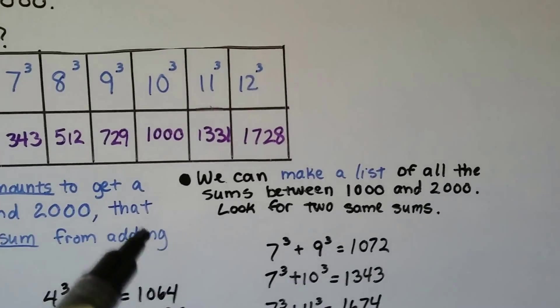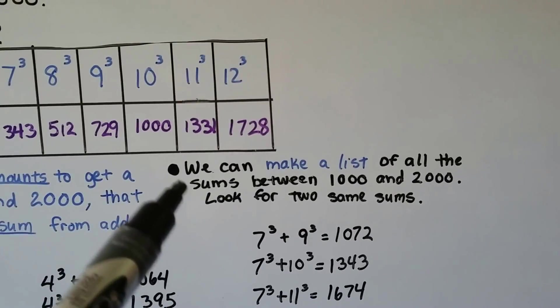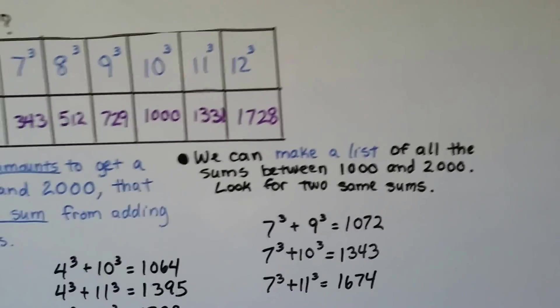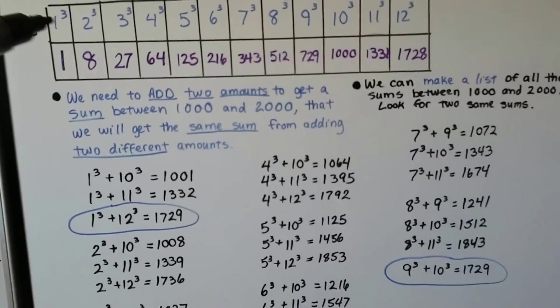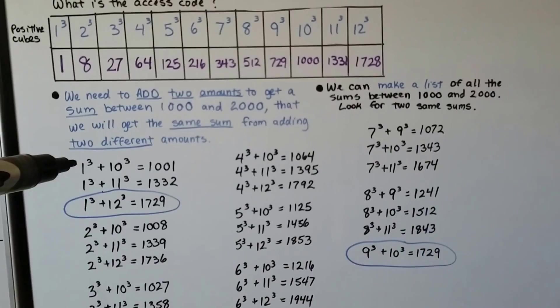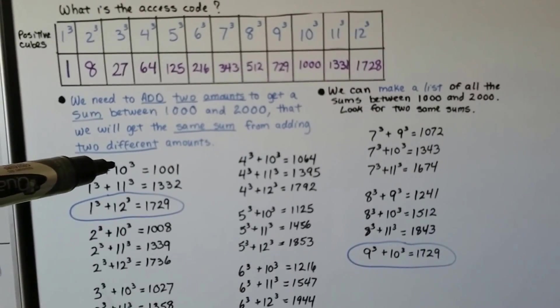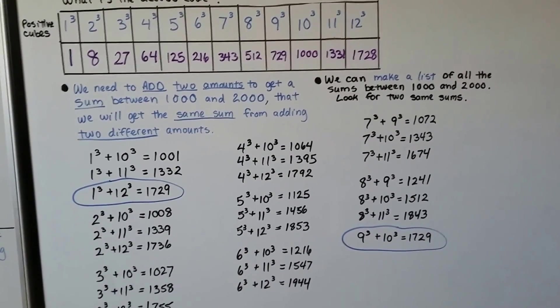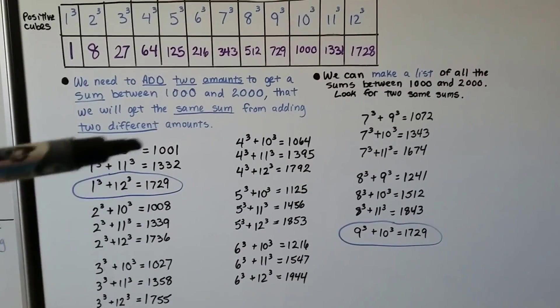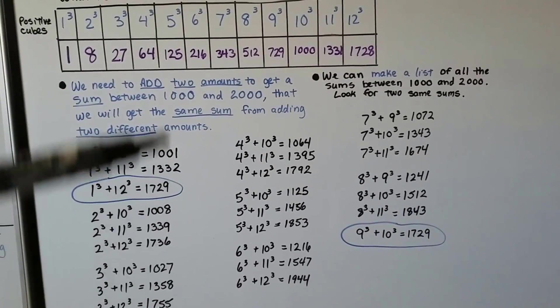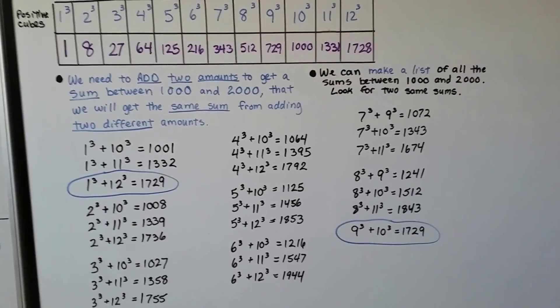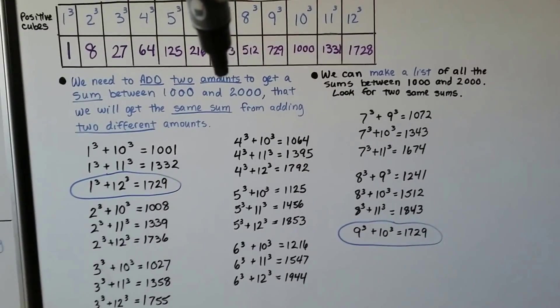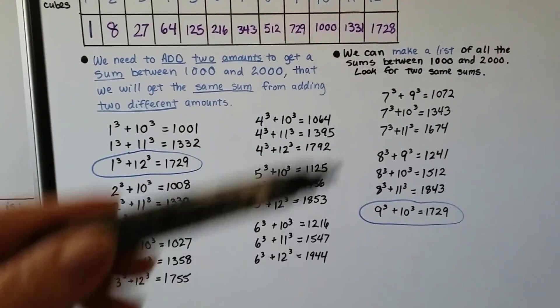So we can make a list. We can make an organized list of all the sums between 1,000 and 2,000 and look for two same sums. That's what I did. I started with 1 cubed, which is 1, plus 10 cubed. That gave me 1,001. And I slowly went down and only came up with sums that were between 1,000 and 2,000. Because if they weren't, we can't use them anyway.